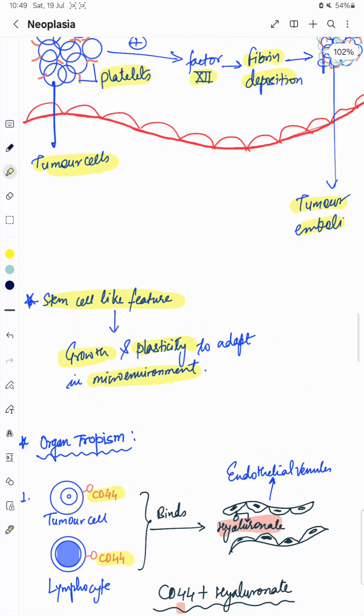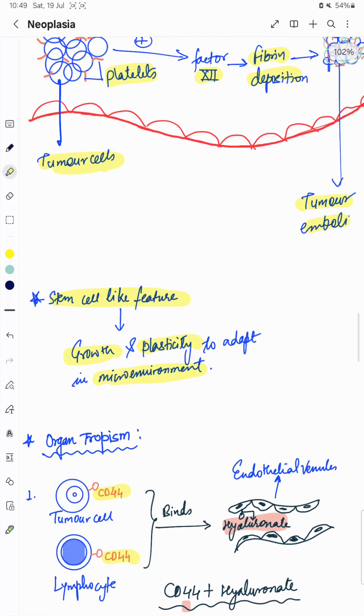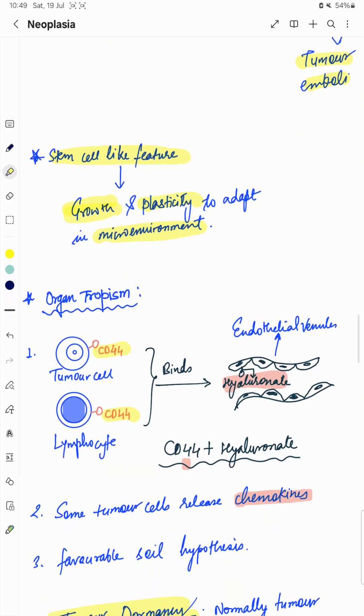Tumor cells acquire or have the ability to act like stem cells or they have stem cell-ness which helps them to grow and adapt according to the various microenvironment, and this will help in the metastasis of cancer cells. What is organ tropism?